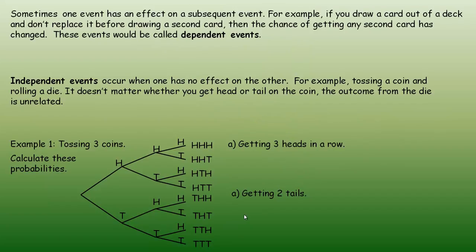Sometimes one event has an effect on a subsequent event. For example, if you draw a card out of a deck and don't replace it — this is called sampling without replacement — and you don't replace it before drawing a second card, then the chance of getting any particular second card has changed. So these events would be called dependent events.